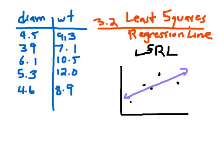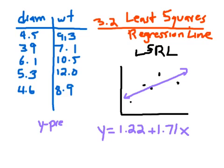Your calculator can calculate the equation of that line. In this particular case, the equation is y equals 1.22 plus 1.71x. We normally write it with slightly unusual notation — this y value is actually the predicted y. In other words, it's not the actual y of the melons; it's what you would predict it to be. The symbol for y-predicted is y with a little hat on top.